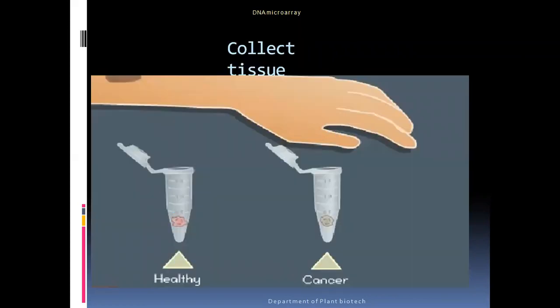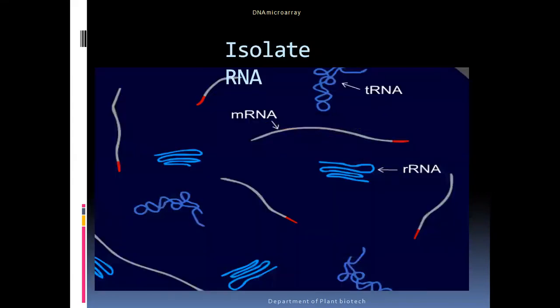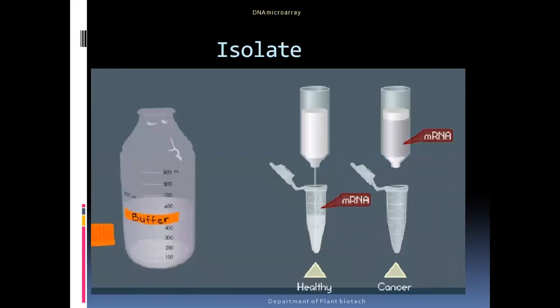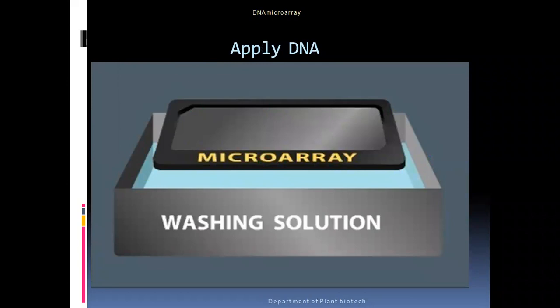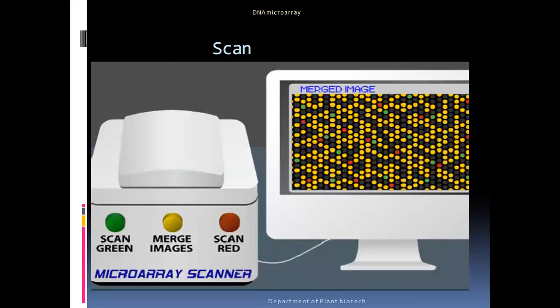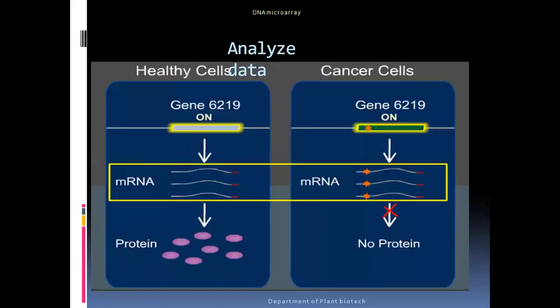After collection of the sample from the individual, we isolate the RNA. We filter or extract the mRNA, and we use labeled DNA as a probe. Then we apply the DNA onto the microarray, and after scanning, we can analyze the images. In cancer cells, if there is no protein expression — due to blocking or lack of expression — we analyze the image of that gene expression pattern further.